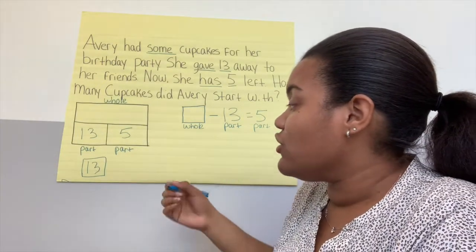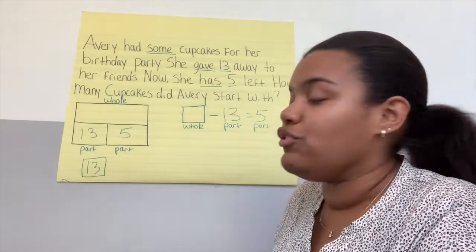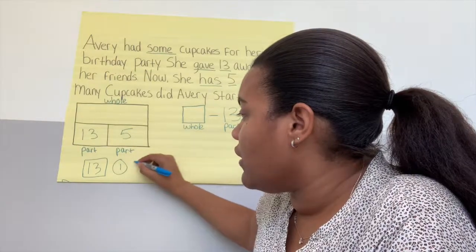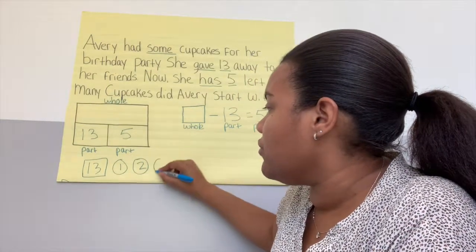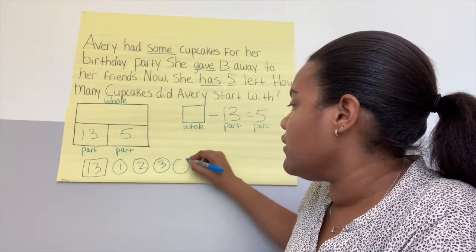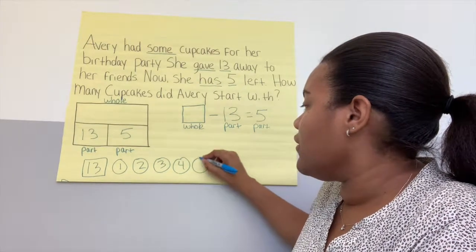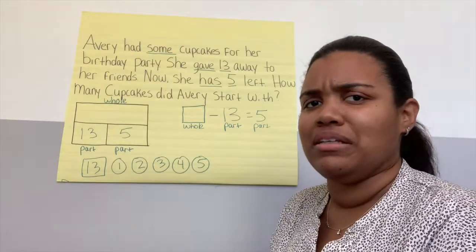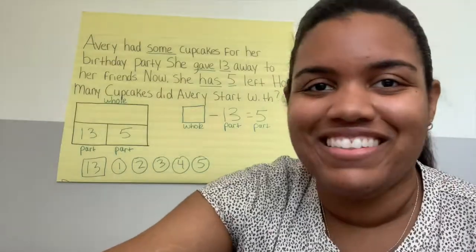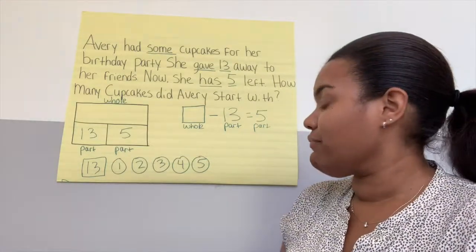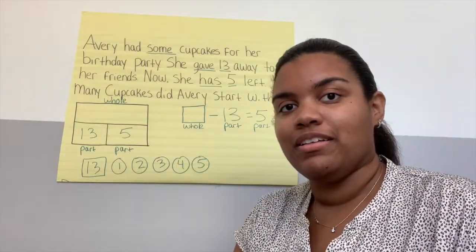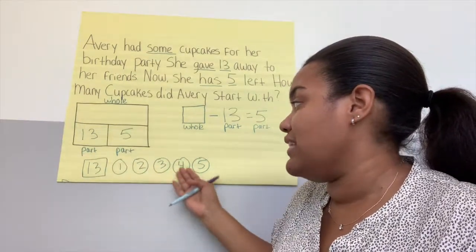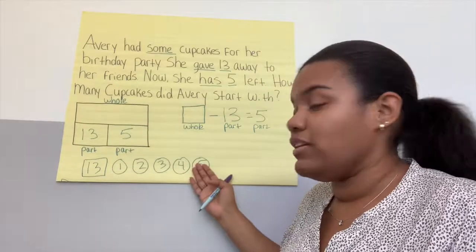So we're at 13. What do we need to do next? Good — draw five circles. Count with me: one, two, three, four, five. Awesome, we got five. So are we done? Is this it? You're right — we're not done yet. So what do we need to do? You are exactly right — we have to count on from 13, and then we'll figure out what our whole is.